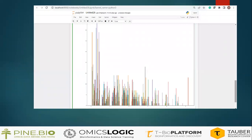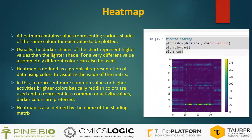This is the histogram that we have obtained using coding in Python. Heatmap: a heatmap contains various shades of the same color for each value to be plotted. Usually, the darker shades of the chart represent higher values and lighter shades represent lower ones. For very different values, a completely different color can be used. It is defined as a graphical representation of data using colors to visualize the value of a matrix. To represent more common values or higher activity, brighter colors — basically reddish colors — are used, and to represent less common ones, darker colors are preferred. A heatmap is also defined by the name 'shading matrix.' On the right side, this is the result of the heatmap using the dataset.